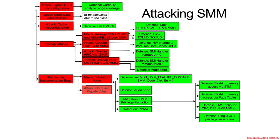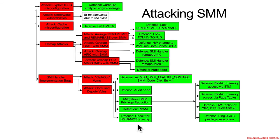That was the confused deputy attack. All the same defensive things apply: auditing the code, privilege reduction. If an STM or page tables restricted the RAM that the SMI handler could write to, it wouldn't be able to clobber hypervisor memory — that memory would be straight up outside its writable range. Things like PPAM: if an attacker used a confused deputy to write into SMRAM and get code execution, PPAM should hopefully detect that. And checking whether pointers overlap with SMRAM or OS regions that shouldn't be written to — or better yet, just create a reserved region so it doesn't have to worry about that.